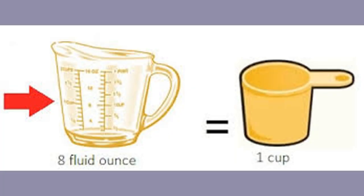A tablespoon in the UK is 15 milliliters, and is equivalent to a soup spoon. There are approximately one and a half dessert spoons per tablespoon. One dessert spoon holds 10 milliliters, and one tablespoon holds 15 milliliters.